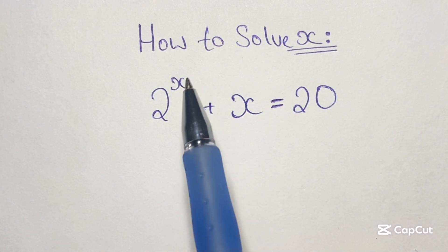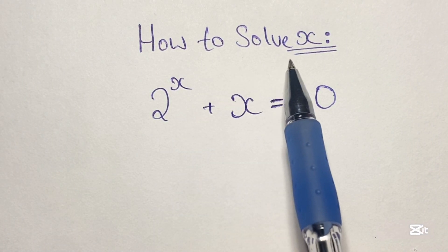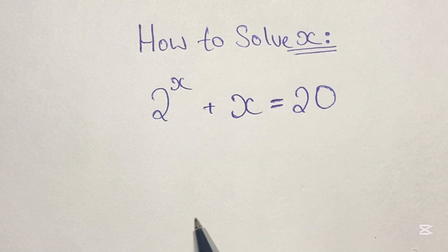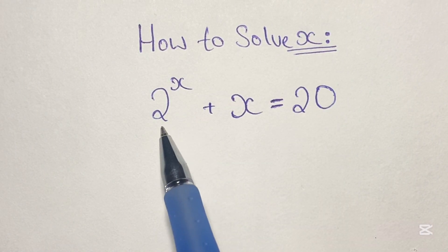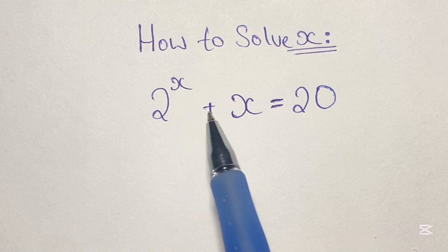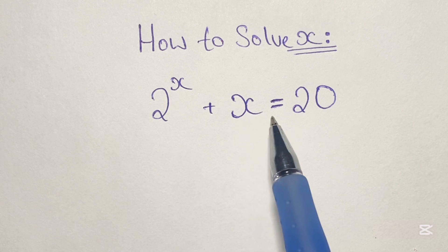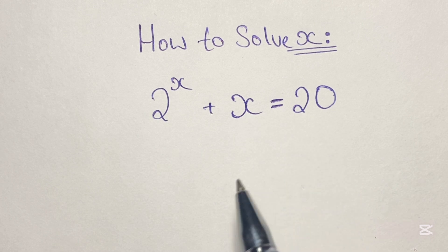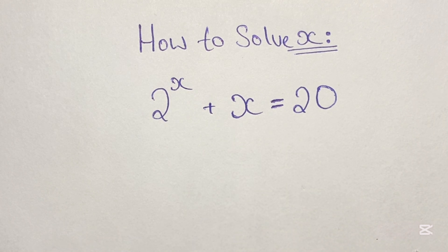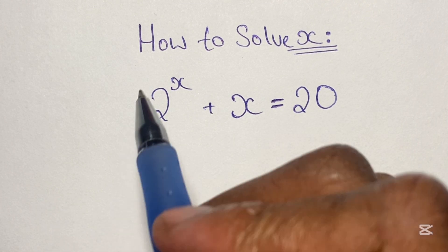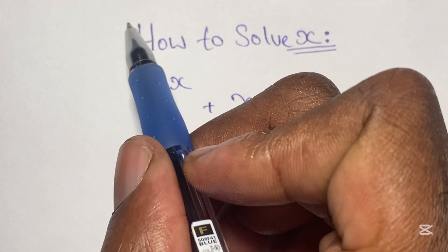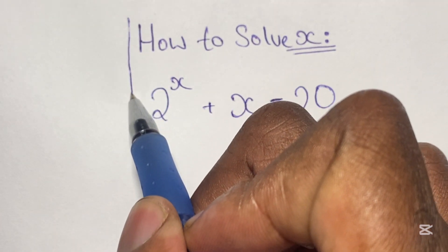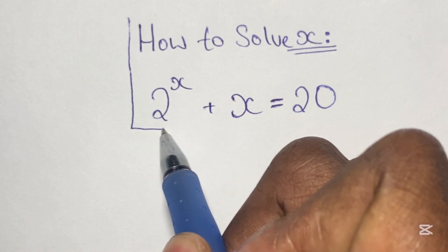Greetings again everyone, welcome back to my channel. Here we have another algebraic exponential equation that we're going to solve. In this equation we have 2 to the power of x plus x is equal to 20, and we are to find the value of x.